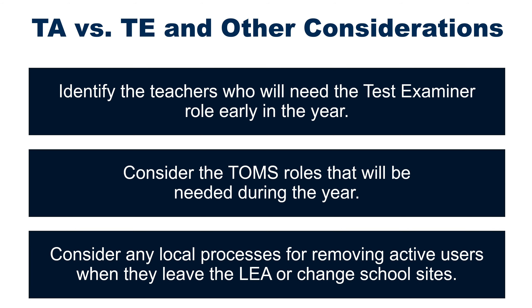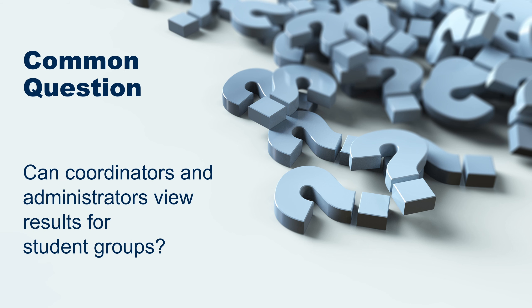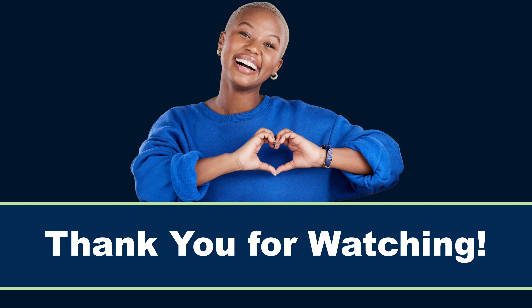Lastly, consider any local processes for removing active users when they leave the LEA or change school sites. Planning for these items during the setup process will make changes easier throughout the year. A common question is: can coordinators, administrators, or other non-teacher level staff view results for student groups? The answer is yes, if the groups are also assigned to them. When the coordinator or administrator creates the groups, they can assign any person with any TOMS role to the groups. Thank you for watching the Managing Access to CSRS video. We hope you found the information to be useful. The full video series title list is located in the description of this video.